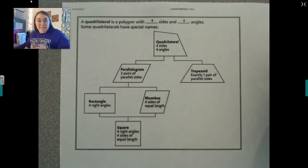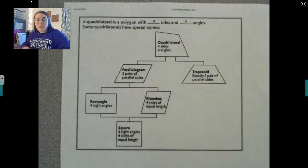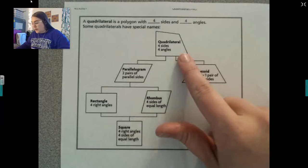Now, a triangle has three sides, right? Quadrilateral has four because quad means four. So any shape with four sides and four angles is a quadrilateral.